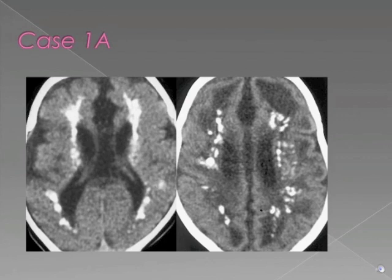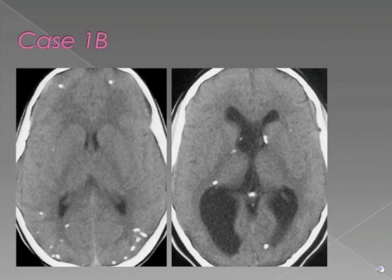Case 1a: We have two axial CT images through the lateral ventricles which demonstrate extensive periventricular calcifications which are more or less symmetric in distribution. Case 1b is a companion case which also demonstrates periventricular calcifications. Note that these calcifications are not nearly as extensive nor as symmetric as in the preceding case. In addition, there are calcifications elsewhere in the brain including within the basal ganglia and at the gray-white junction.